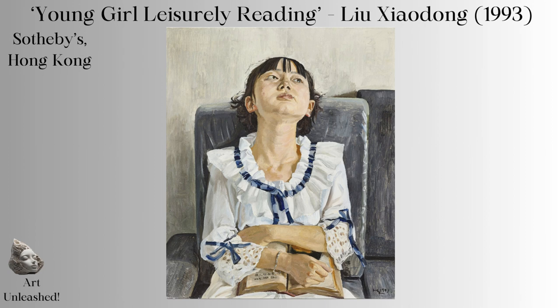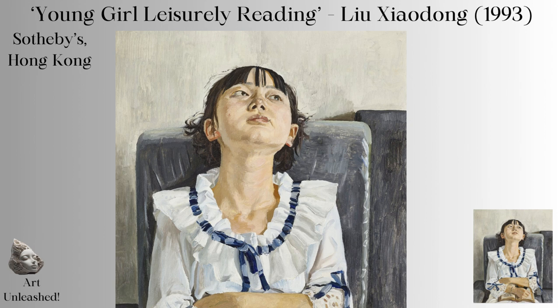In Young Girl Leisurely Reading, we are immediately drawn to the figure of a young girl absorbed in her book. The painting invites us to ponder what world she has been transported to — is it a world of fantasy, a historical epic, or perhaps a tale mirroring her own life? Set against a nondescript backdrop, the girl's gaze is directed upwards, perhaps lost in thought or imagination sparked by her reading. This upward gaze might symbolise hope, dreams, or the quest for knowledge. Xiaorong's choice of a simple environment focuses our attention on the girl, making her the nexus of the narrative.